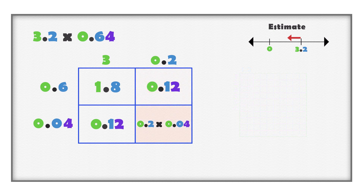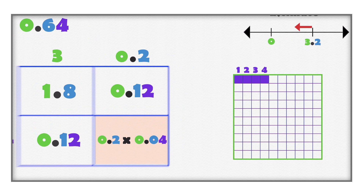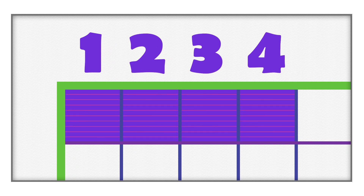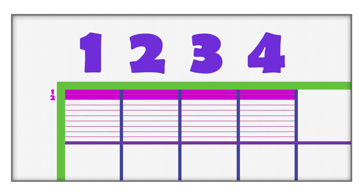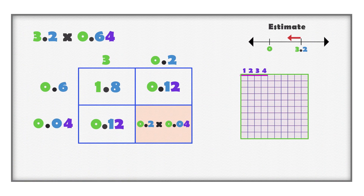Multiply two tenths with four hundredths. Start with four hundredths. Divide the four hundredths into ten equal parts. Two tenths of four hundredths is two out of ten of each of the four hundredths. This is eight parts out of one thousand total parts, or eight thousandths.